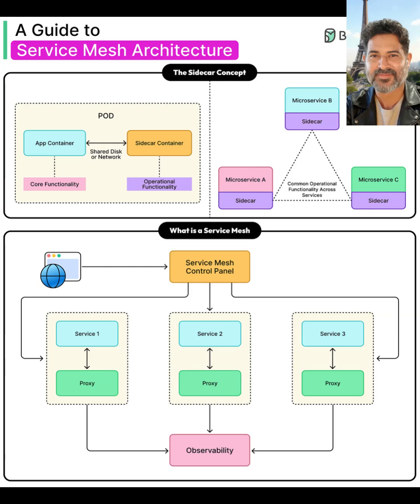When this sidecar pattern is repeated for every microservice, each service instance gets its own local proxy deployed as a sidecar. Together, these sidecars implement common operational capabilities like retries, timeouts, circuit breaking, TLS, and metrics collection consistently across microservice A, B, and C.